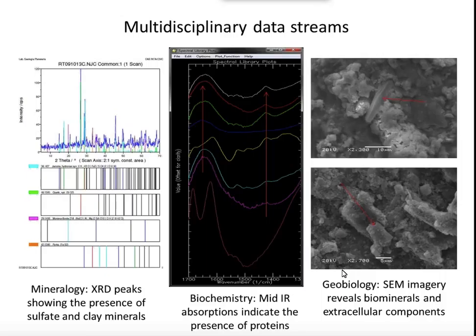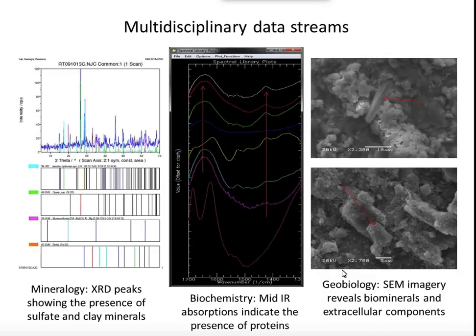We also generate data streams across multiple disciplines. On the left we have mineralogy established using X-ray diffraction, and these XRD peaks show the presence of sulfate and clay minerals in some of the samples returned. We can provide insights into biochemistry and the organic content within samples brought back to the laboratory using mid-IR data, which show the presence of protein stretches. From a geobiological perspective, SEM imagery can reveal bio-minerals and extracellular components. So we have scales ranging from the orbital scale right down to the microscopic, spanning about 9 orders of magnitude, and we can trace mineralogical signals all the way along.